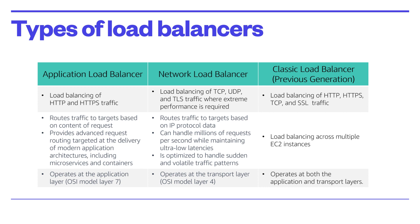The third type, a classic load balancer, provides basic load balancing across multiple EC2 instances and operates at both the application layer and the network layer. It supports load balancing of applications that use HTTP, HTTPS, TCP, and SSL. The classic load balancer is an older implementation, and when possible you can replace it with a modern dedicated application load balancer or a network load balancer. But sometimes it is still needed to support HTTP, HTTPS, TCP, and SSL protocols in the same application.